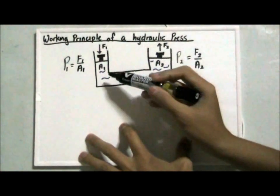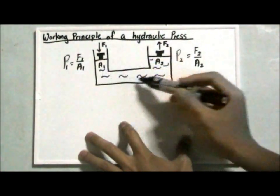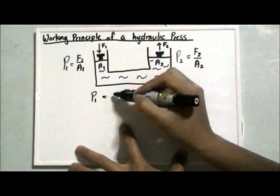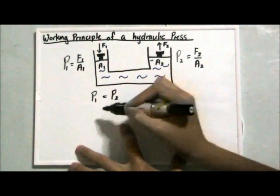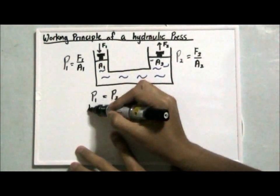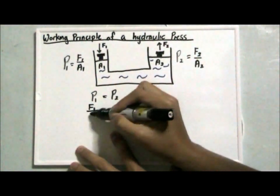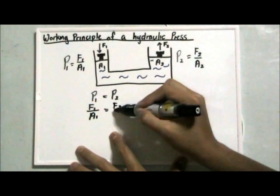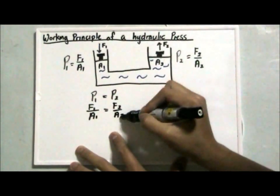As the pressure is transmitted equally throughout the liquid, we can say that P1 equals P2, and that brings us to F1 over A1 is actually equal to F2 over A2.